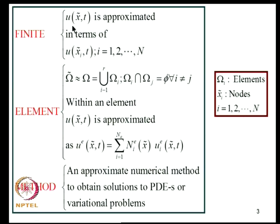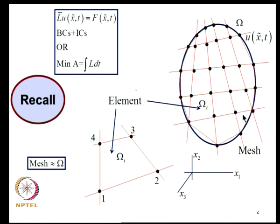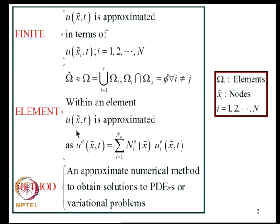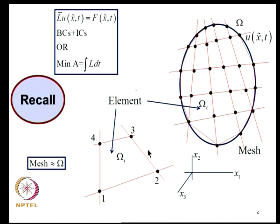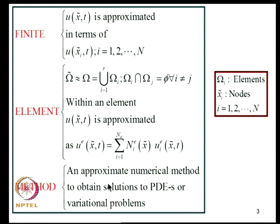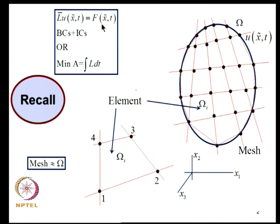With this, each subdomain is called an element. We approximate the field variable U(X1, X2, X3, T) in terms of values at the nodes. At a set of N nodes, within an element we approximate the field variable using interpolation — the N_I^e are the interpolation functions. The collection of elements approximating the domain is known as the mesh. This approach leads to an approximate numerical method for solving problems posed as partial differential equations or variational principles.